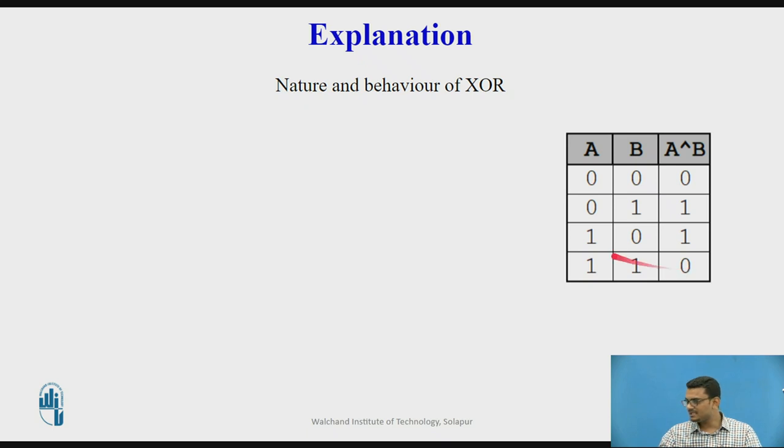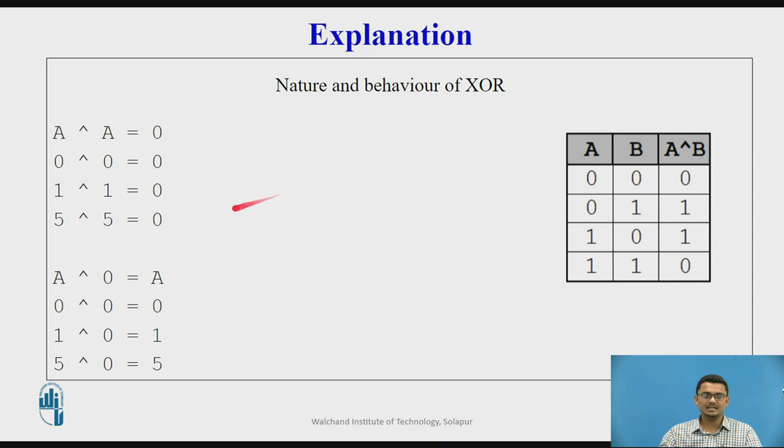If the inputs are different or either of the input is 0, then the other input results as the output. If both the inputs are same, then the XOR operation leads to 0 output. This happens when any binary or decimal number is operated upon.